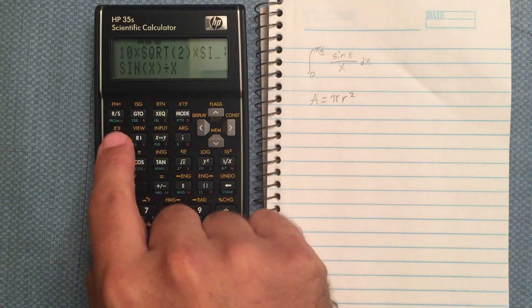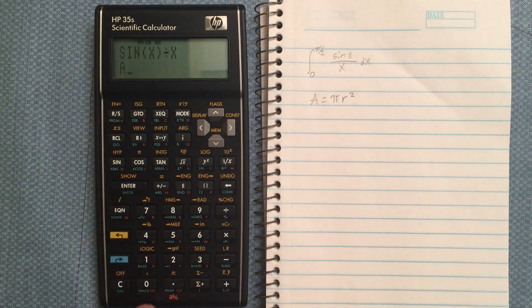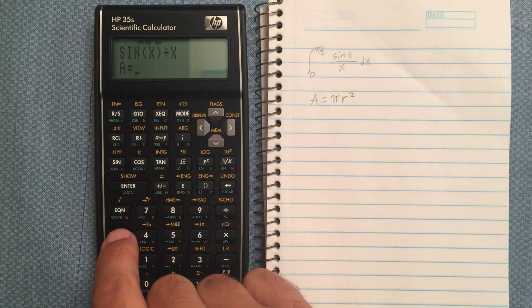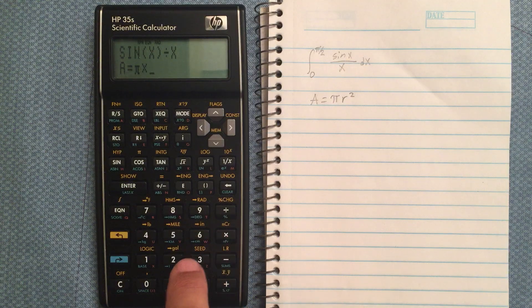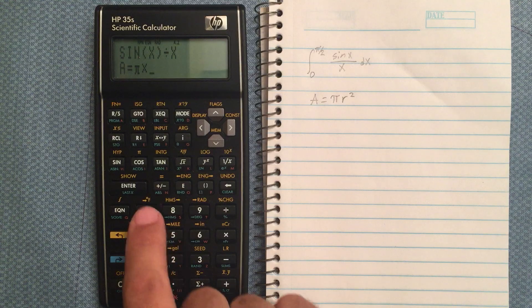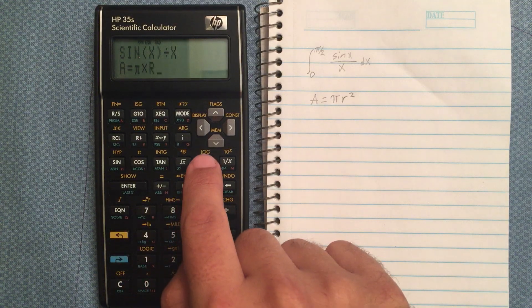I can say A is equal to pi times R squared.